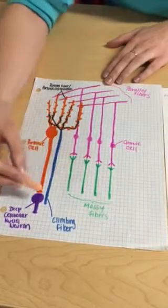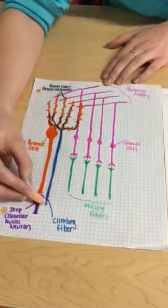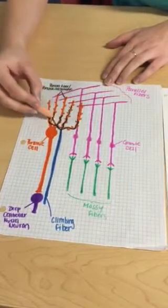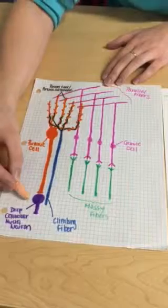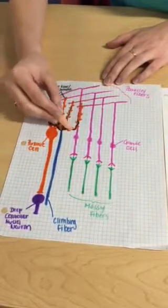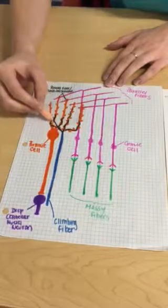Next, are the climbing fiber pathways. These are the vines in the Purkinje fiber trees. They originate at the deep cerebellar nuclei and their axons come up to the molecular layer of the cerebellar cortex. They are afferent fibers as well.